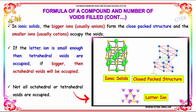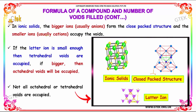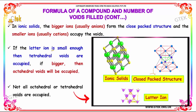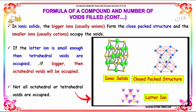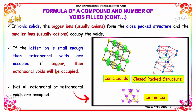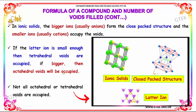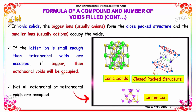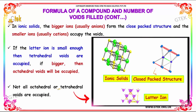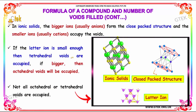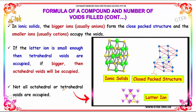If the cation is small enough, then tetrahedral voids are occupied. If bigger, then octahedral voids will be occupied. Note that not all octahedral or tetrahedral voids are occupied — it is either one type or the other.